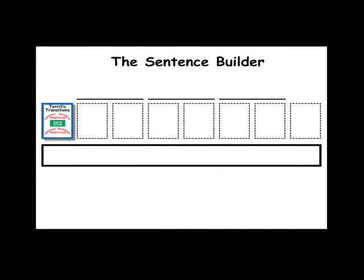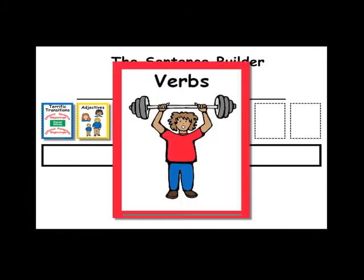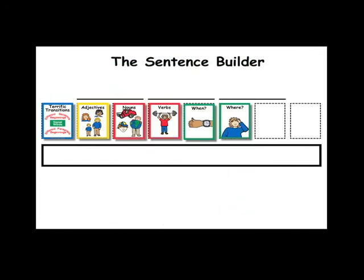The dotted boxes is the area to display the parts of speech cards. These cards are color coded red, yellow, and green for instructional purposes.